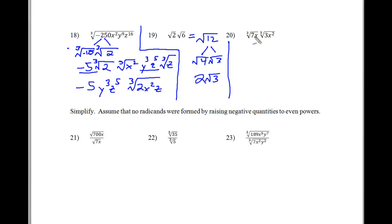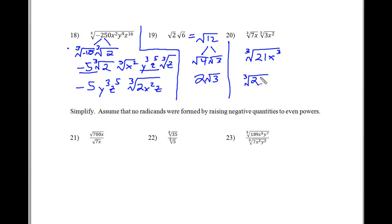Same thing goes here: 7 and 3 are not rootable individually. But if we put them together, the x and x squared combine to make x cubed. So the cubic root of 21 is just the cubic root of 21 — but how many times does 3 go into x cubed? The answer is 1. So there we have our x and our cubic root of 21.